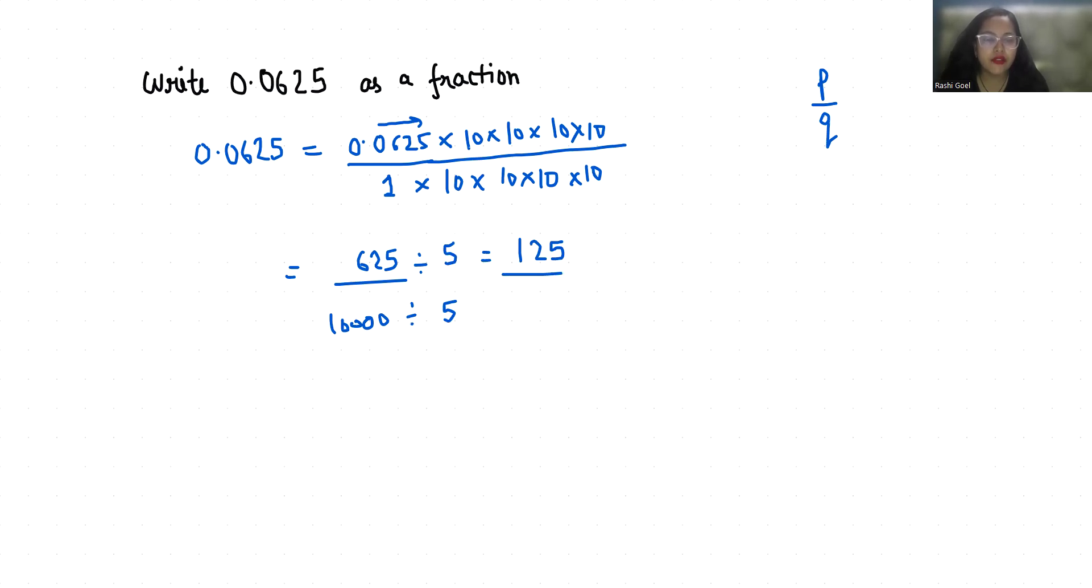Again I am going to divide it by 5. So it gives us 25 and it gives us 5 times 4 is 20, double 0. Again with 5.